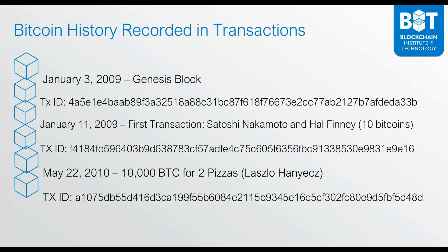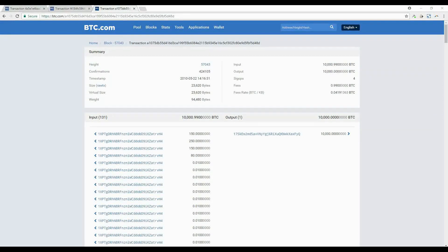The fact that Laszlo was able to negotiate two pizzas for 10,000 bitcoins established the price of a bitcoin. When you peg the price and calculate it, it works out to approximately four bitcoins for every one penny of pizza he bought. For those 10,000 bitcoins, we have a permanent record captured on the public blockchain, visible at the transaction ID for that transaction.